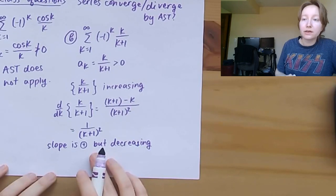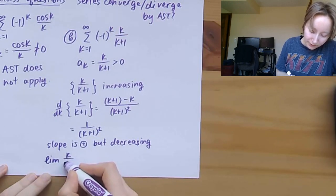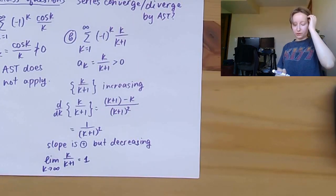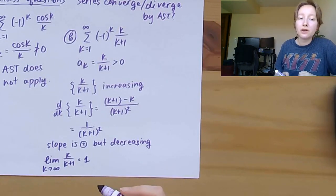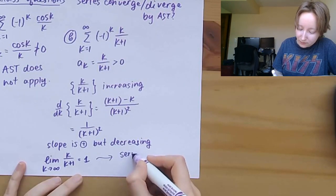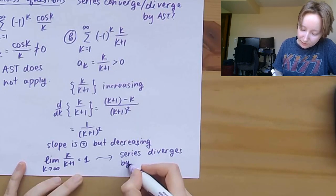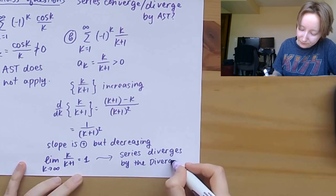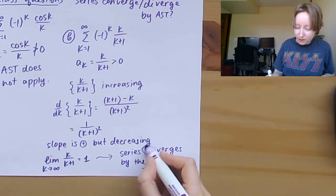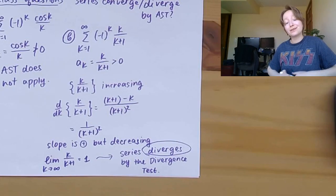We can still apply the divergence test. Taking the limit of k/(k+1) as k goes to infinity gives 1, which is not equal to 0, so the series diverges by the divergence test. We could also cite the alternating series test for divergence. Because the series diverges by the divergence test, we don't need to worry that the sequence is increasing rather than decreasing — we're citing an entirely different test.